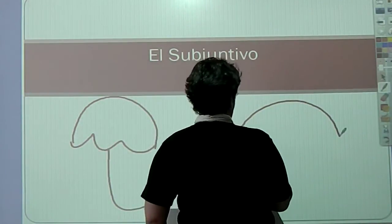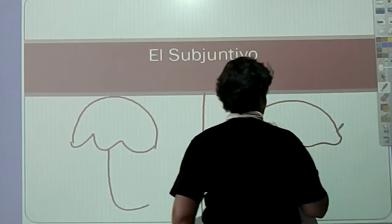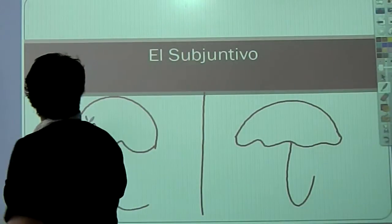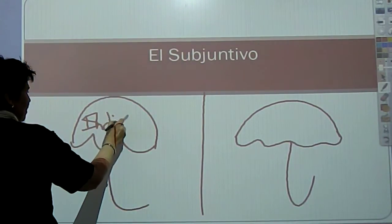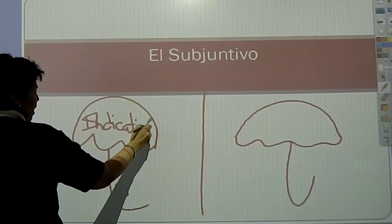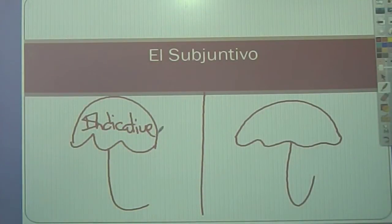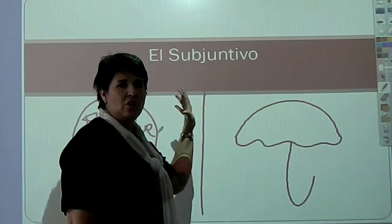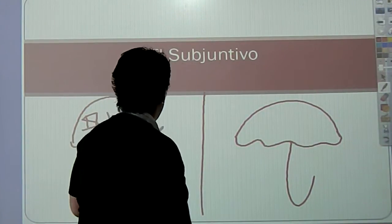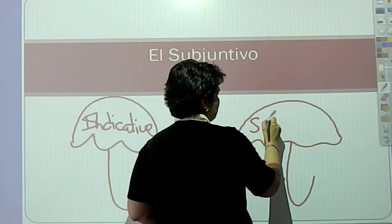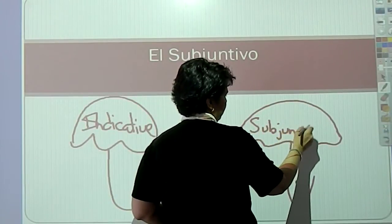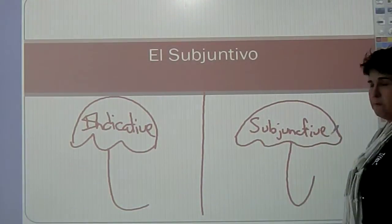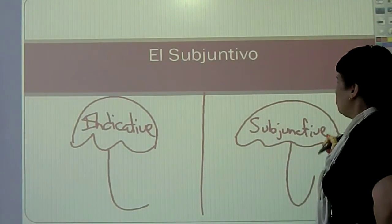Under one umbrella, we're going to write the word indicative. Indicative means everything we've done until this moment. And then subjunctive is what we're going to do after this. Let me be a little more clear.